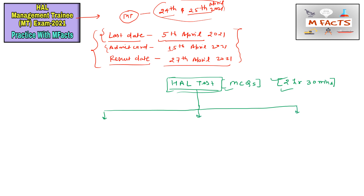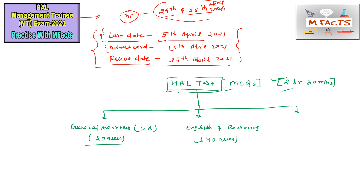There are three parts in the HAL online test. The first part is General Awareness, also known as GA, and it will have 20 questions. The second part is English and Reasoning, which is very important nowadays for any examination, and it will have 40 questions. The remaining 100 questions will be from the Metallurgy part — the engineering discipline.